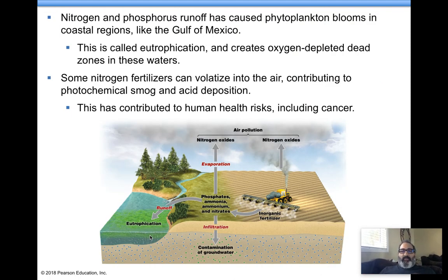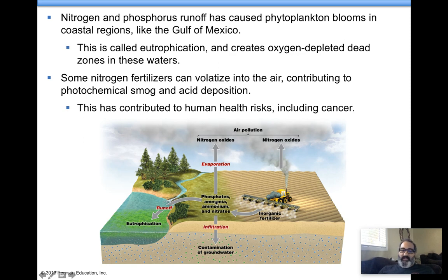Nitrogen and phosphorus runoff — fertilizers high in nitrates and phosphates, various nitrogen and phosphorus compounds — lead to eutrophication: oxygen-depleted dead zones in the water. Some nitrogen-based chemicals, these nitrates, can volatilize and evaporate. Nitrogen-based compounds form nitrogen oxides, which form nitric acid, which can become acid rain.